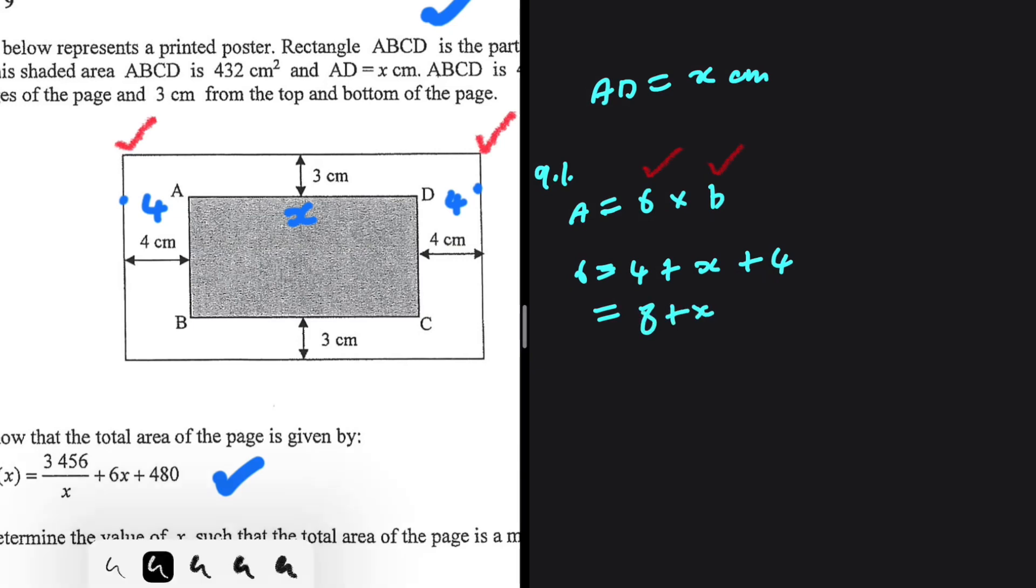We have 4 from here to here, then x from here to here, then 4 from here to here. So that length is 4 + x + 4, which is 8 + x.